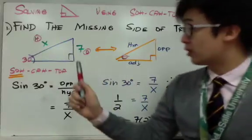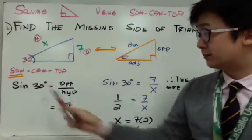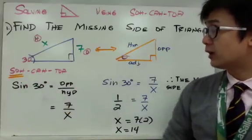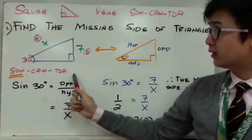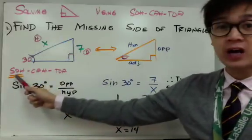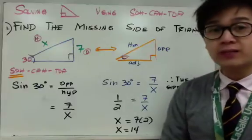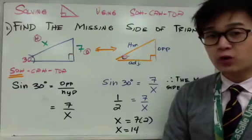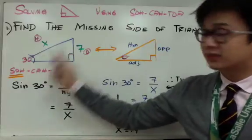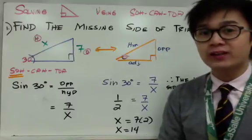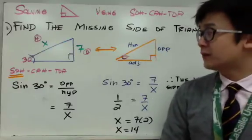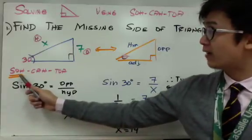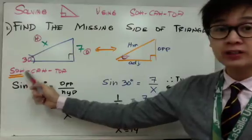In the trig ratio formula, we have SOH CAH TOA. Among the three formulas, the one that uses both opposite and hypotenuse is sine. In a problem like this, you can't just use a formula right away — you need to think for a second about which formula to use to find the missing side. So here, we're using sine because we have opposite, which is seven, and we have the hypotenuse, which is missing.